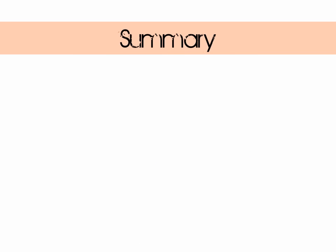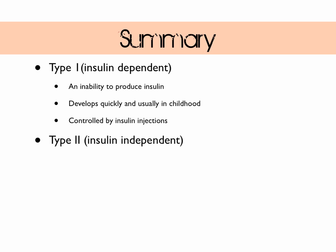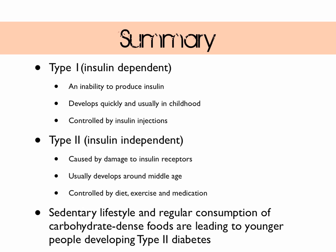To summarize: there are two types of diabetes. Type 1 is insulin dependent — an inability to produce insulin that develops quickly early in life and is controlled by insulin injections. Type 2 is insulin independent diabetes, caused by damage to insulin receptors on cells, usually developing around middle age, and controlled by diet, exercise, and medication. A sedentary lifestyle and regular consumption of carbohydrate-dense food are leading to younger people also developing type 2 diabetes.